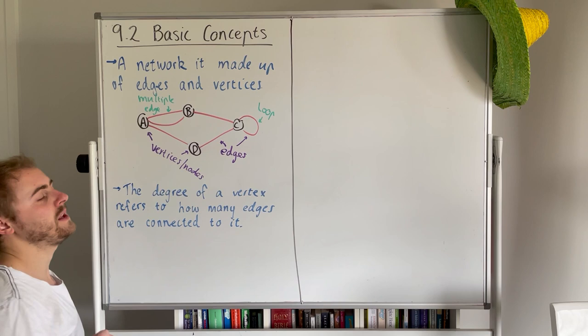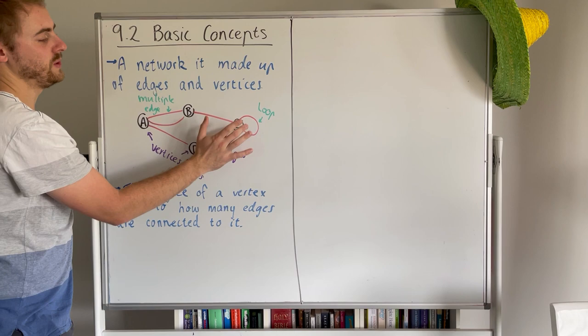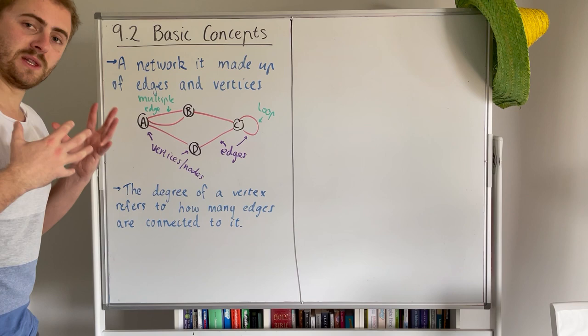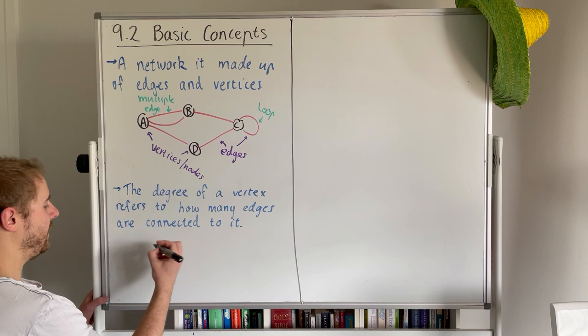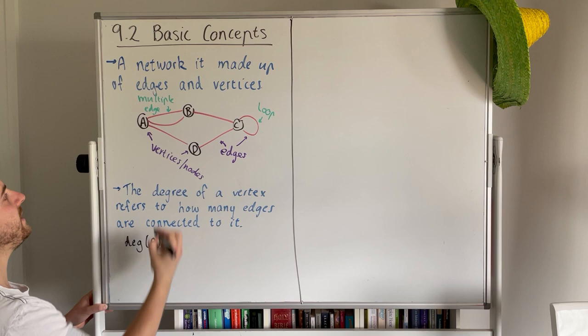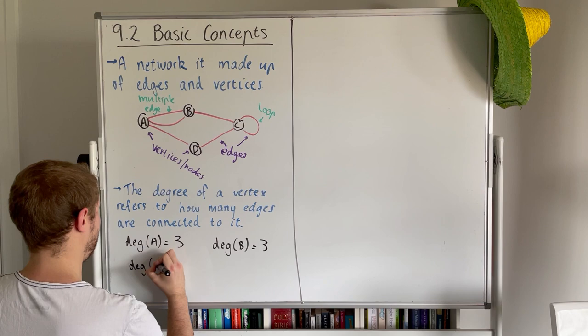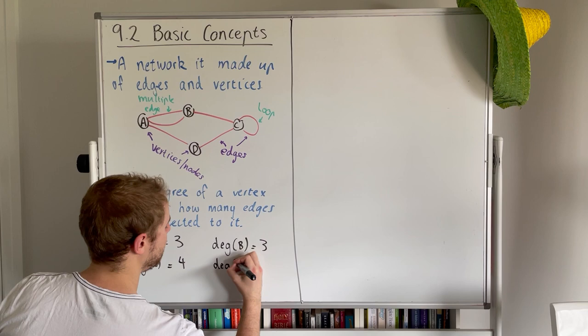Now this one here with C, we count the loop as two degrees. We count both ends of the one edge as two degrees. So the degree of C would be one, two, three, and four. So a loop contributes two degrees to that one vertex. That's important to remember. When we write it out we often write it like this: deg(A) means degree of A, in this case is three. Degree of B is also three. Degree of C as we just talked about is four, and finally the degree of D is two.